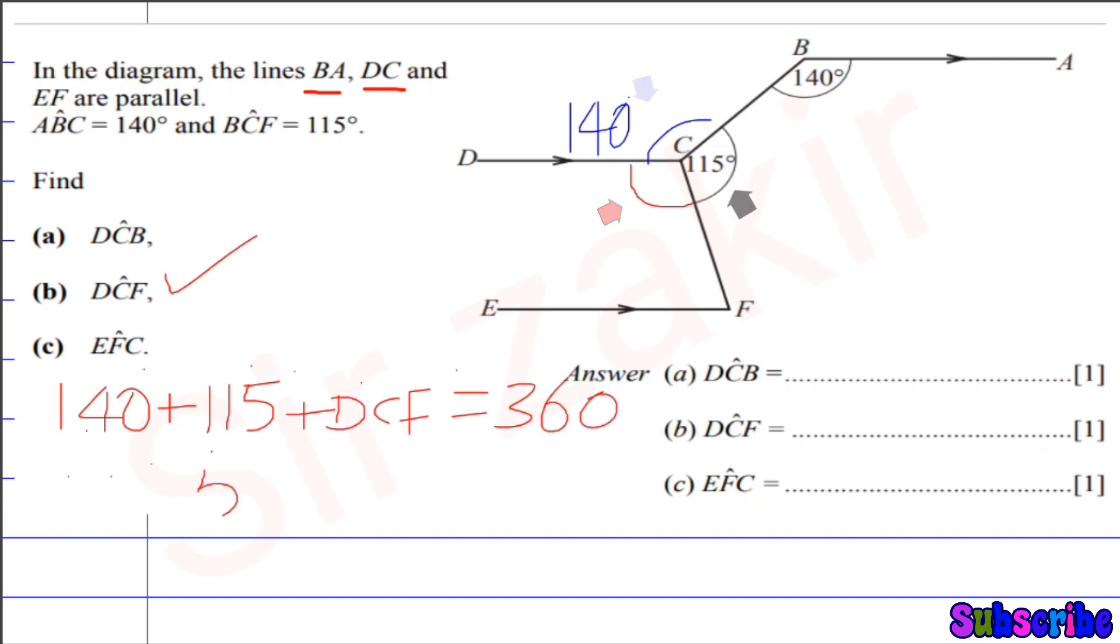So if we add them, 5 plus 0 will be 5, 4 plus 1 is 5, 1 plus 1 is 2 plus DCF equals 360. And now DCF will be 360 degrees minus 255.